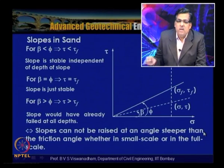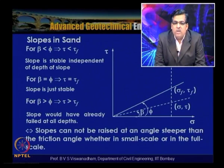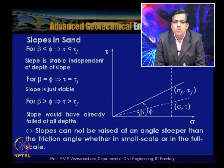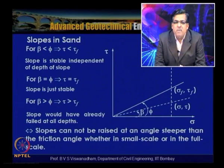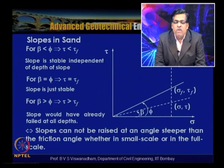Slopes cannot be raised at an angle steeper than the friction angle, whether in small scale or full scale, when you do not use any reinforcement inclusions. For beta less than phi, tau will be less than tau_f and the slope is stable, independent of the depth of the slope. For beta equal to phi, the slope is just stable; for beta greater than phi, the slope would have already failed at all depths.